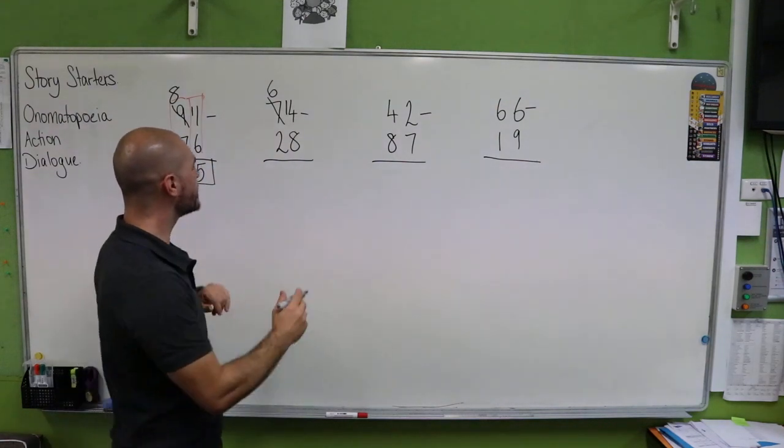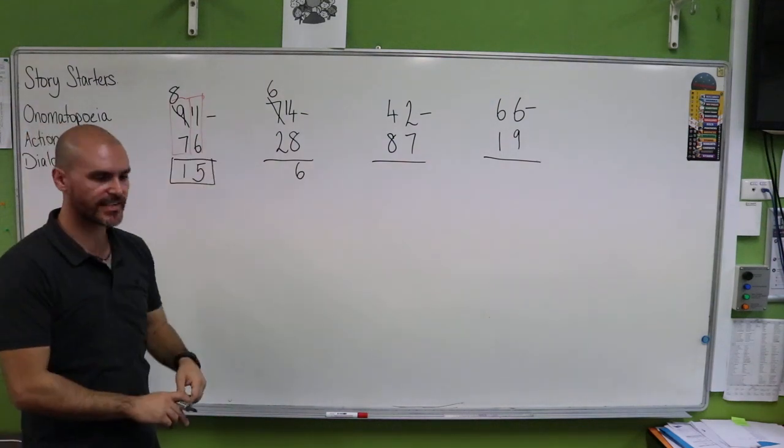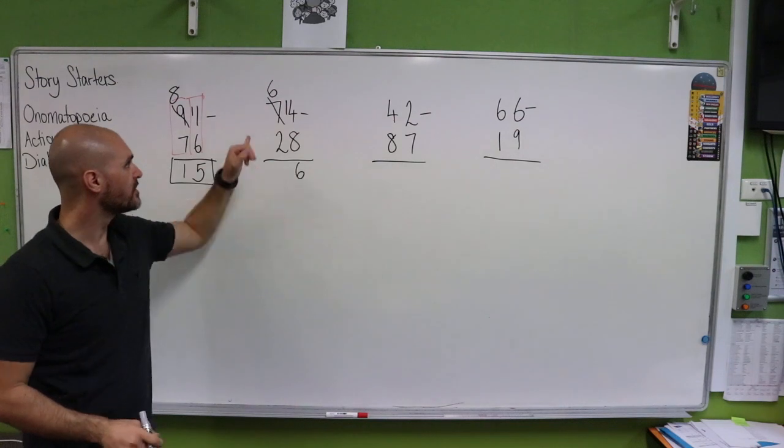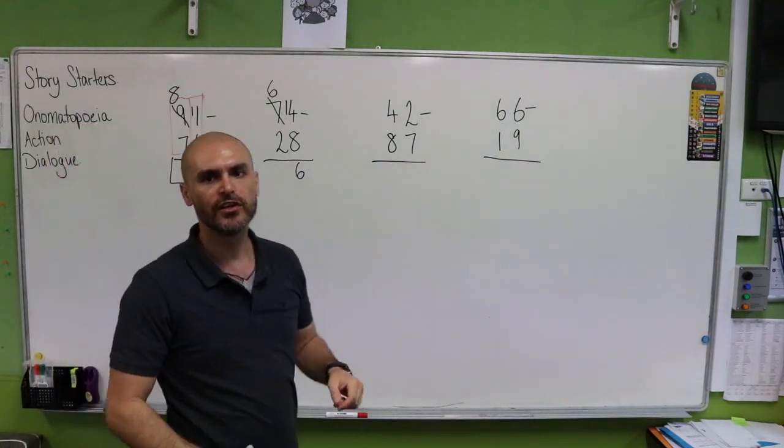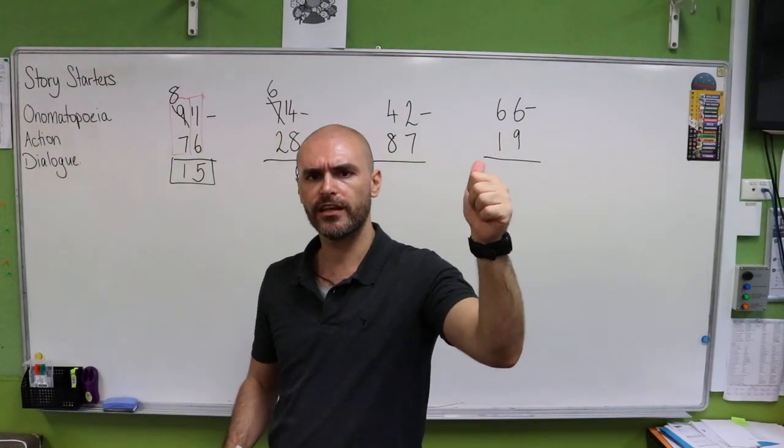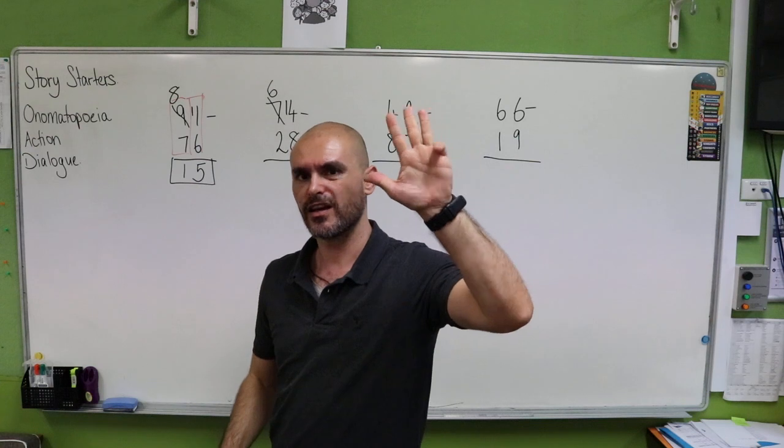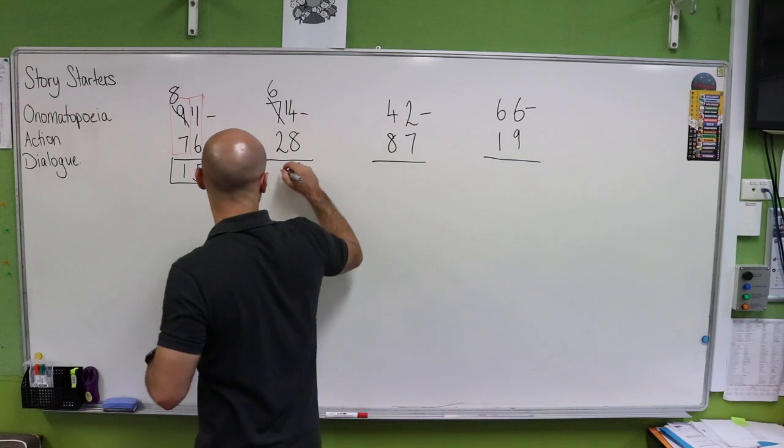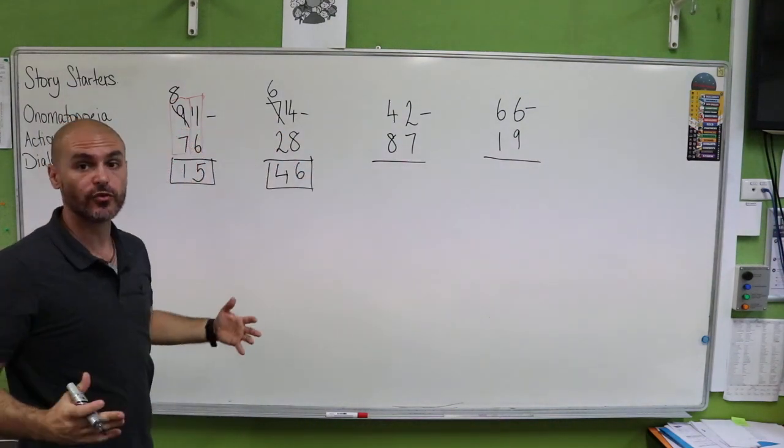So our answer here is six. Now we have six take away two. We're going to count how many numbers between six and two. So we have two, three, four, five, six. How many numbers was that? What's our final answer? Four. And that brings us to 46.